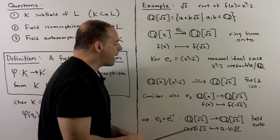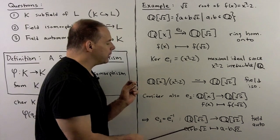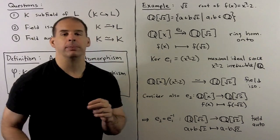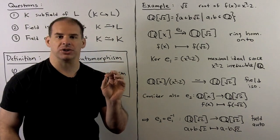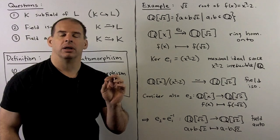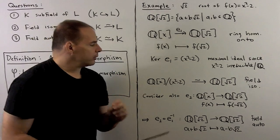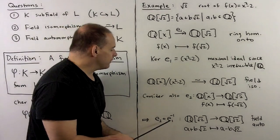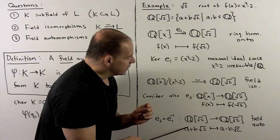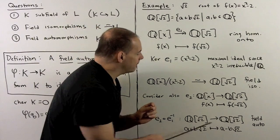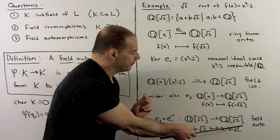Following what happens, this composition carries a + b√2 to a − b√2. Because it's a composition of isomorphisms, this is a field automorphism.